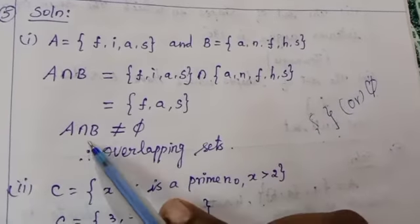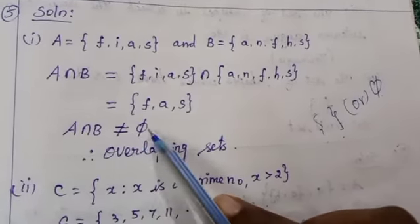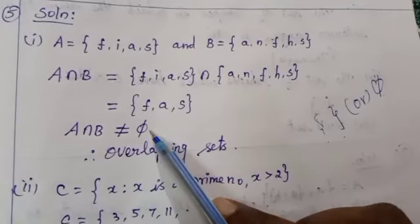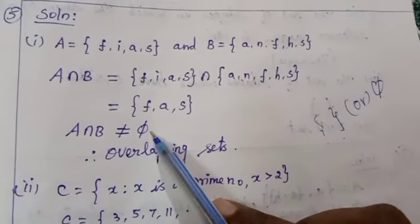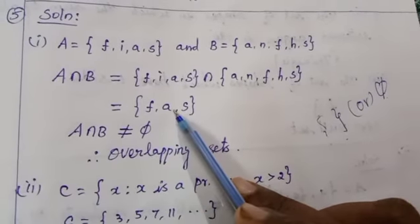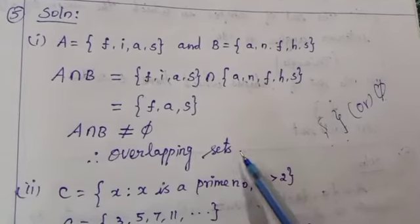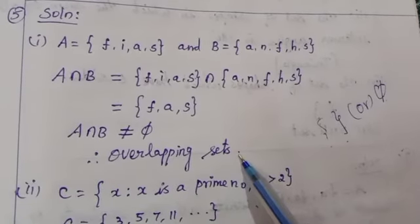A intersection B is not equal to empty set. Not equal to empty set means they have common elements. So these are called overlapping sets.